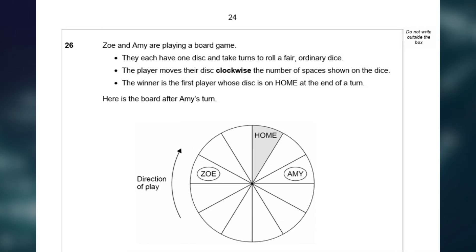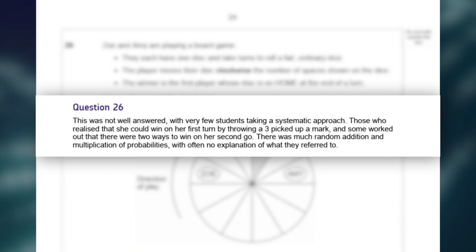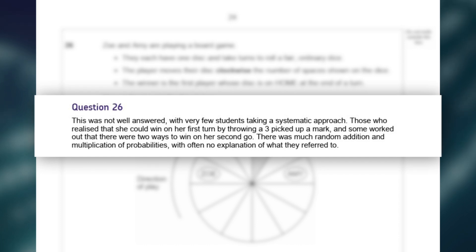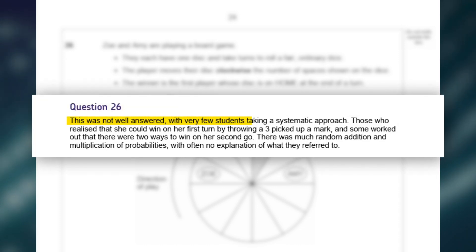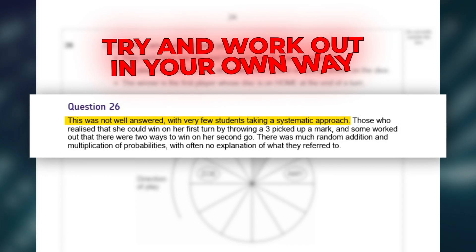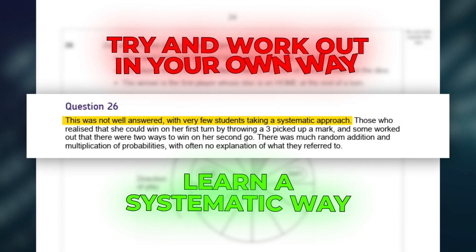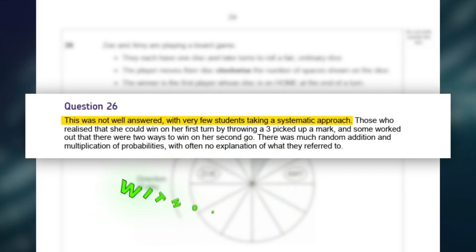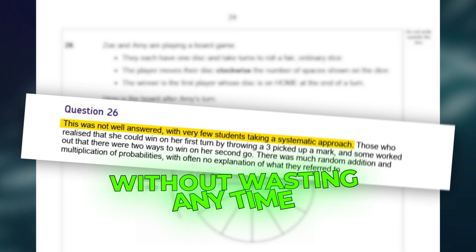Next up is question 26, and I'm sure this is a question that you're all going to look at and probably dread. The examiner's report is very clear-cut with the information that they've given, saying this was not answered well, with very few students taking a systematic approach. Now this is the key for this question. Don't look at this question and try and work it out in your own way. You need to learn a systematic way that every single time you see a question like this you know exactly what to do without wasting any time and you know you're going to get the marks for it. So let's go through that now.